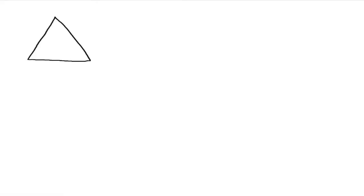Suppose we have an equilateral triangle. All three sides are the same length, so we'll call them x. And all three angles are the same — they're all 60 degrees. That's an equilateral triangle.